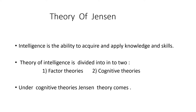The theory of intelligence is divided into two: factor theories and cognitive theories. I am going to deal with cognitive theories. Under cognitive theories, Jensen's theory comes.